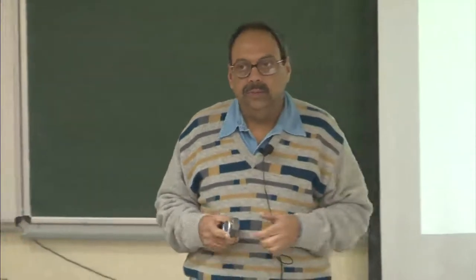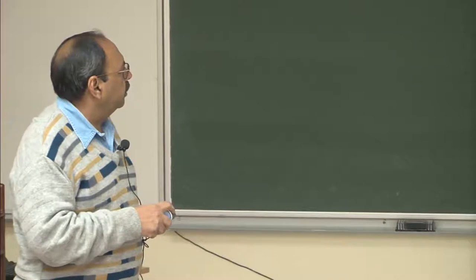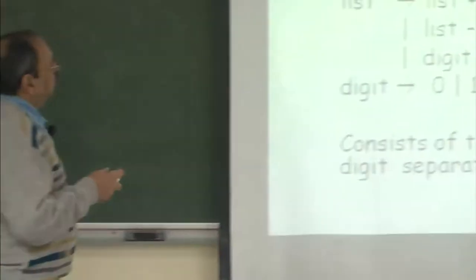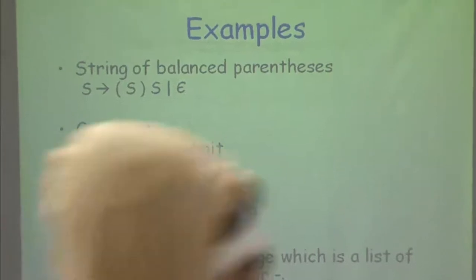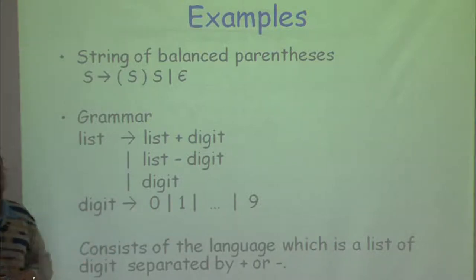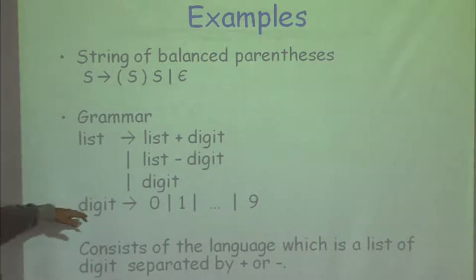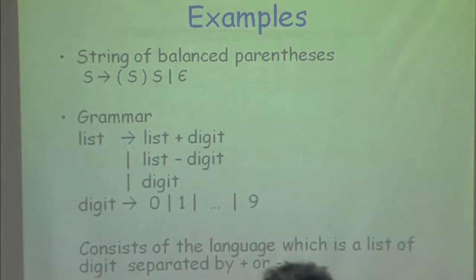We started looking at how to use grammars and how to specify syntax using grammars. There were two examples: one was looking at how to specify a balanced set of parentheses, and then we had another grammar where we said we are going to look at all digits separated by a plus or minus sign. We want to check within the process of parsing whether a given string belongs to either language. One way is that if I can derive it from the start symbol by continuously replacing a non-terminal on the right-hand side with one of its productions, then I know that it is a valid string.